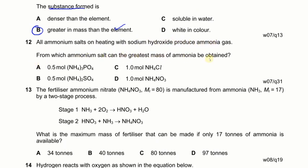All ammonium salts heated with sodium hydroxide produce ammonia. From which ammonium salt can the greatest mass of ammonia be obtained? The ammonia produced depends on the number of ammonium ions. Ammonium phosphate has 3 NH₄⁺ ions, ammonium sulfate has 2, and others have 1 each. With 0.5 moles of ammonium phosphate, multiplying by 3 gives 1.5 moles of ammonia — the greatest. The answer is A.